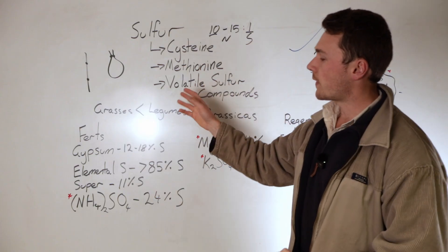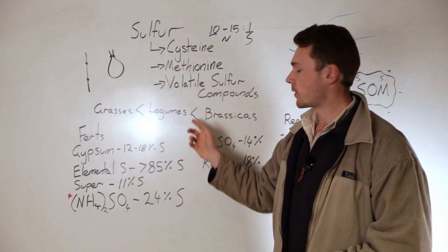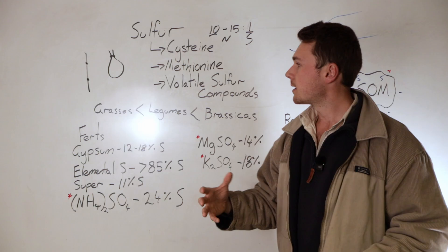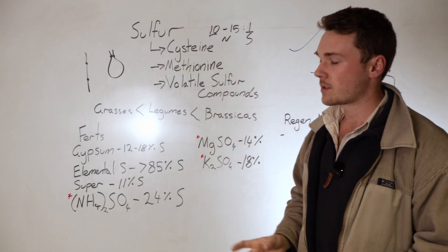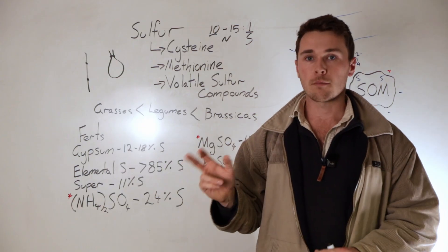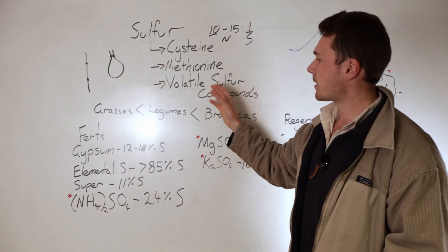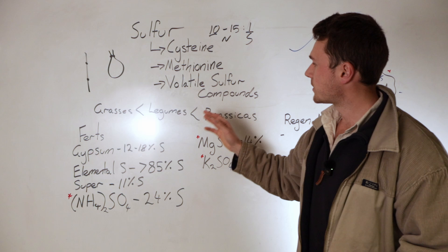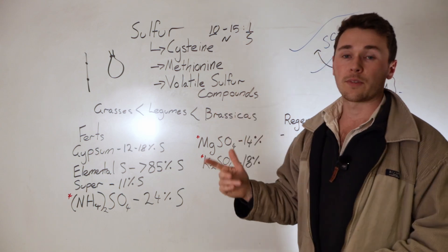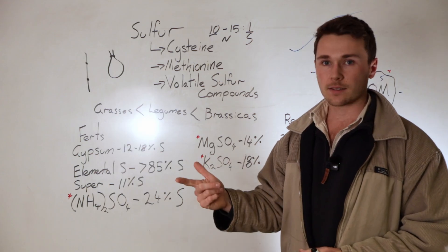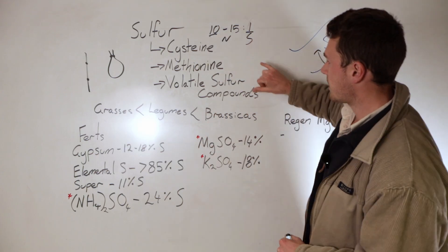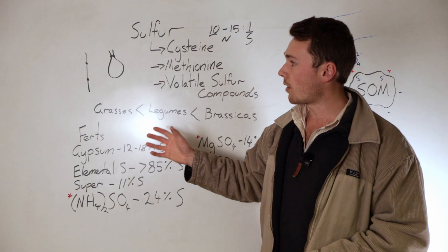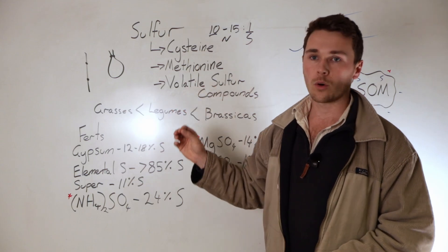It's somewhere between 10 to 15 to 1, so that's 10 to 15 nitrogen to 1 sulfur. Typically, we like to shorten that to a 10 to 1 just so that we're hitting our sulfur requirements. What this allows is enough sulfur in the plant to convert all of that nitrogen into either cysteine and methionine and then amino acids. It's super important. The other thing that sulfur is quite important for is volatile sulfur compounds. These drive a lot of flavor and aromatic properties of a lot of our plants. If you think of garlic and onion and brassicas, they're the main kind of three, as well as every other plant, but they're examples of plants that have a higher production of these volatile sulfur compounds.